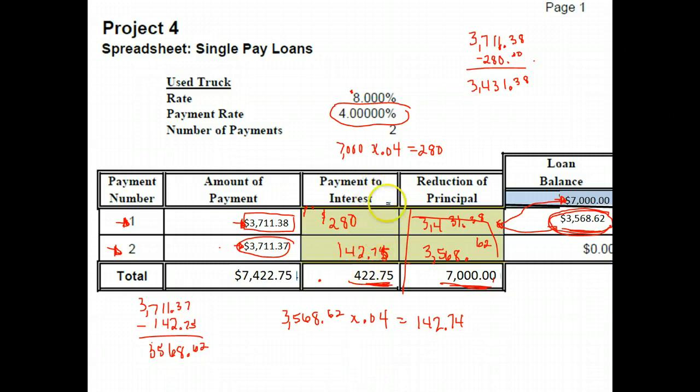So, again, to find your payment to interest, take the current balance of the loan times the interest rate. To find your reduction of principal, you take your amount of your payment and subtract the amount that went to interest.